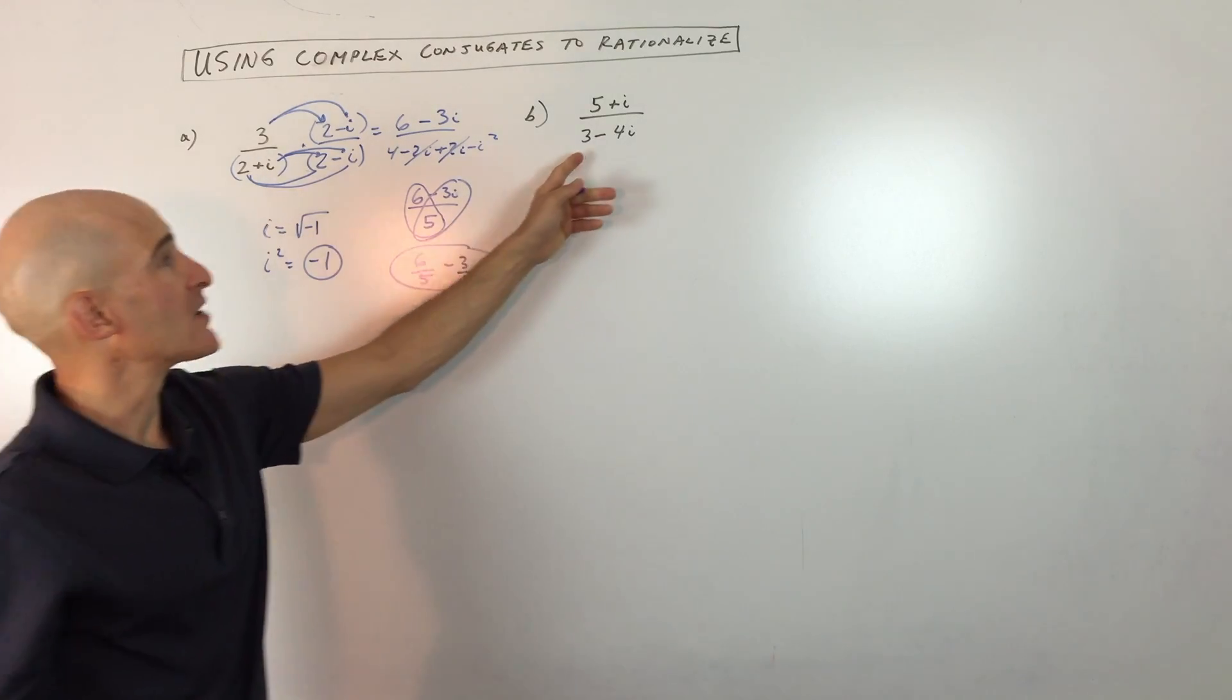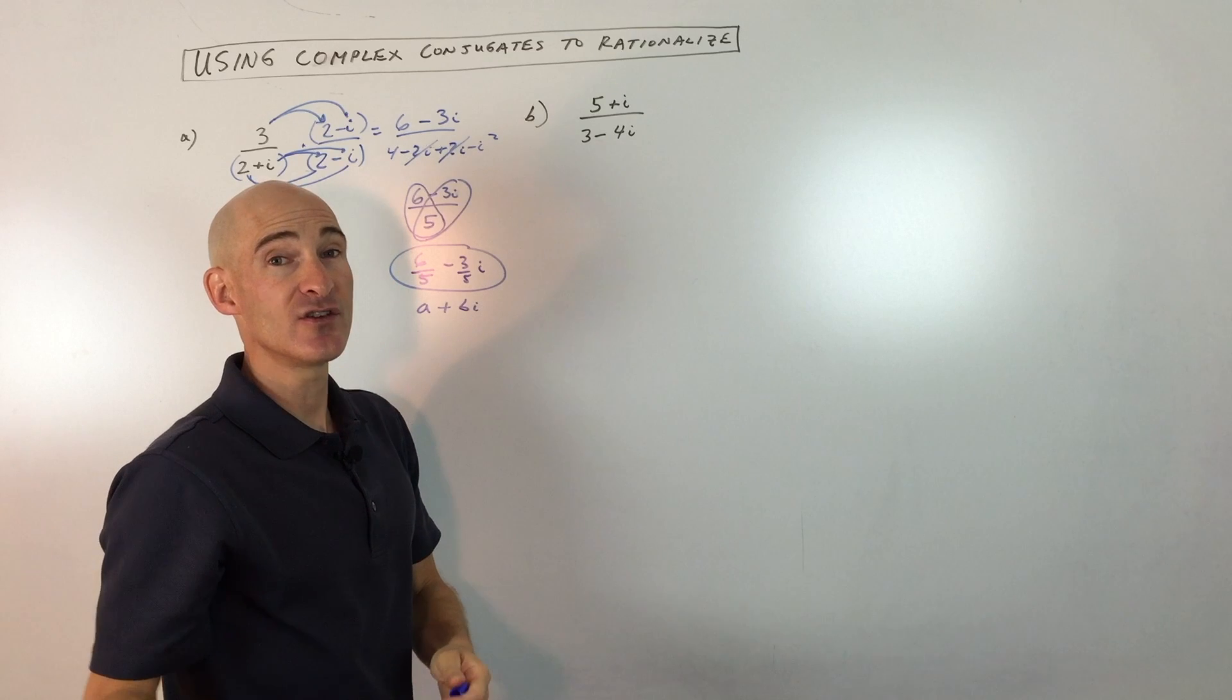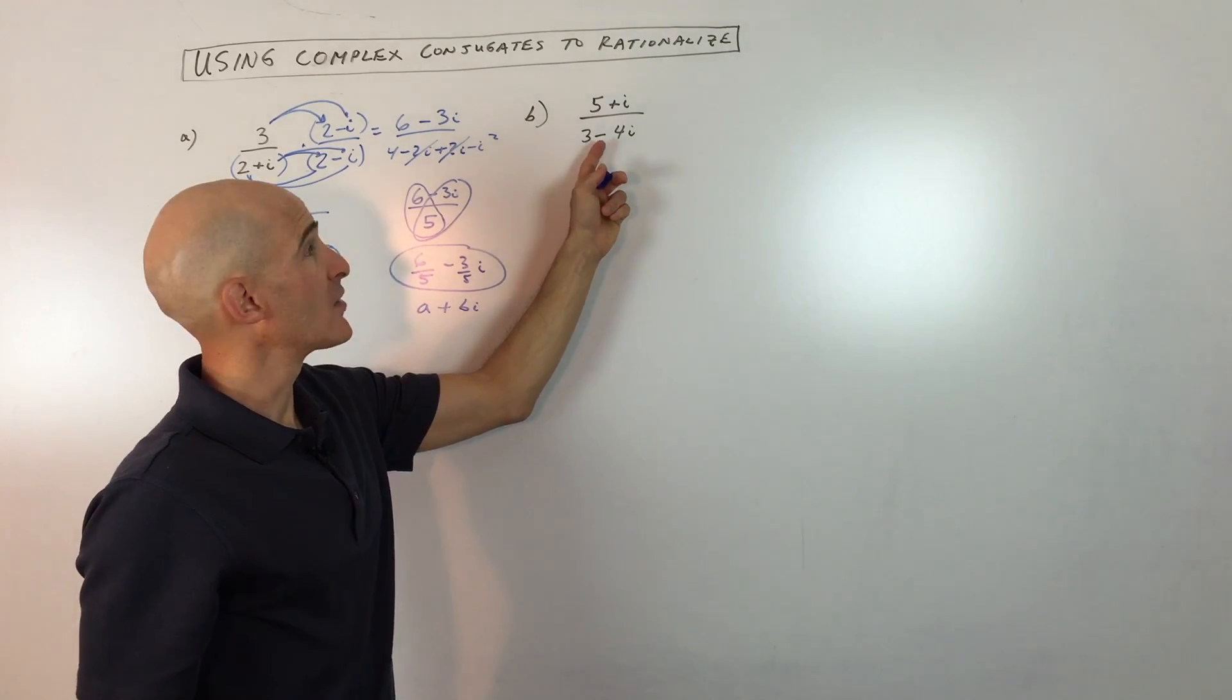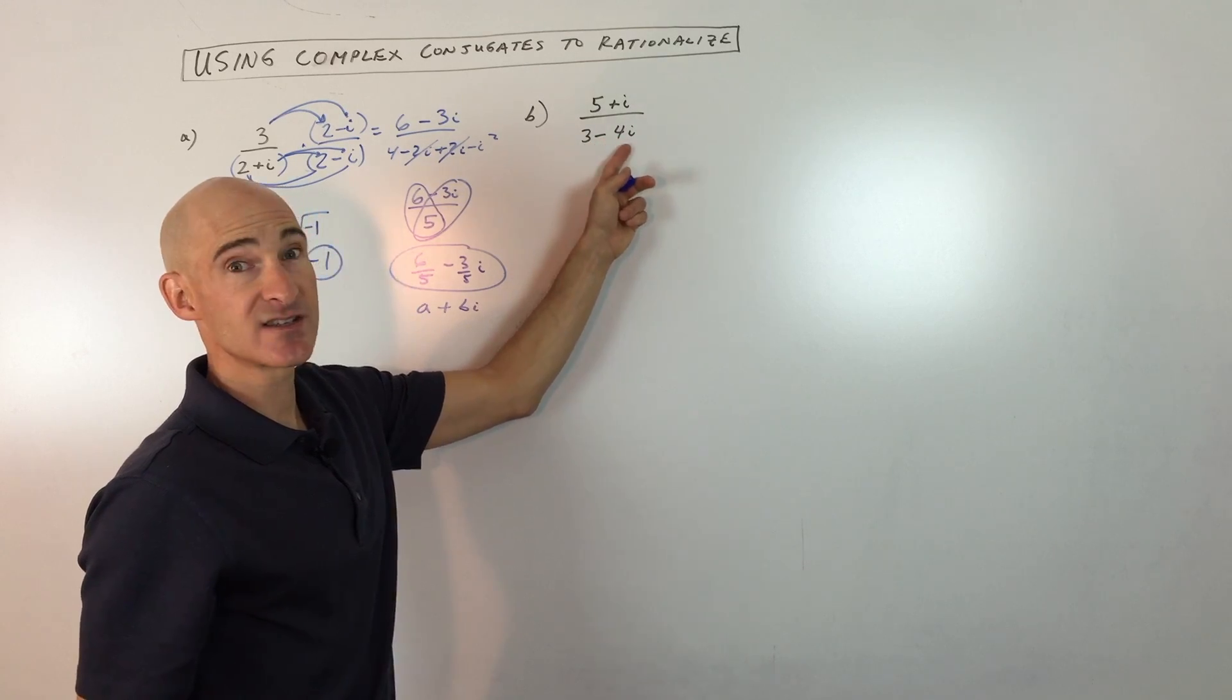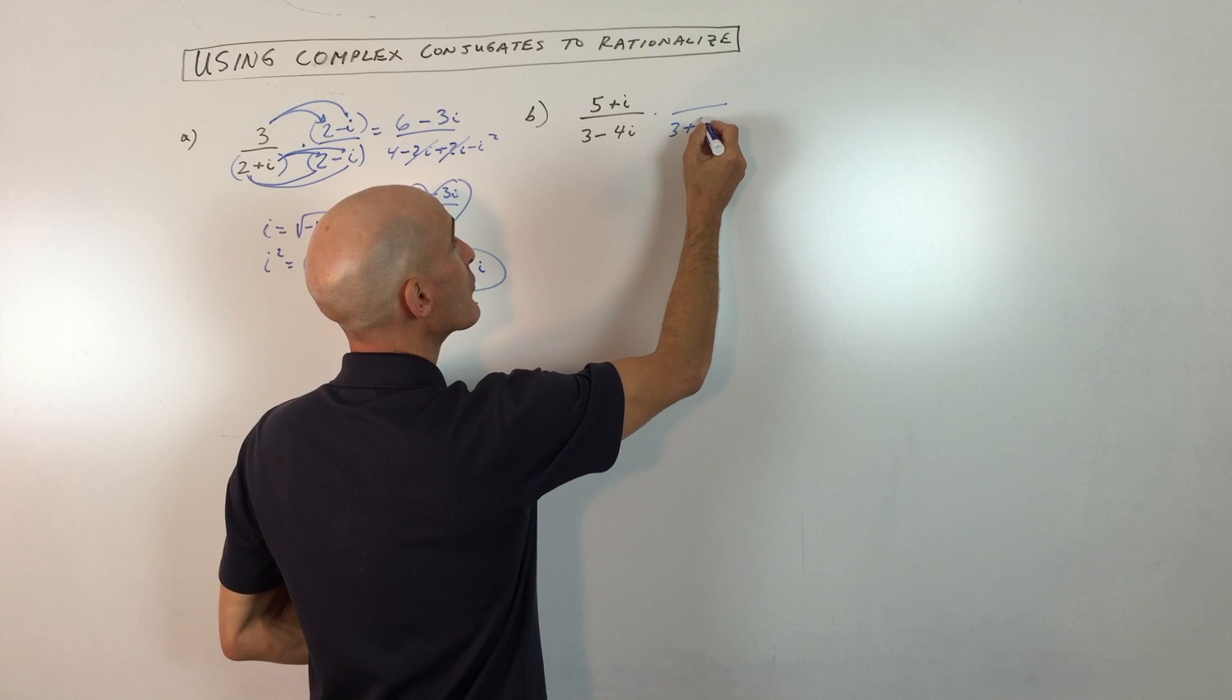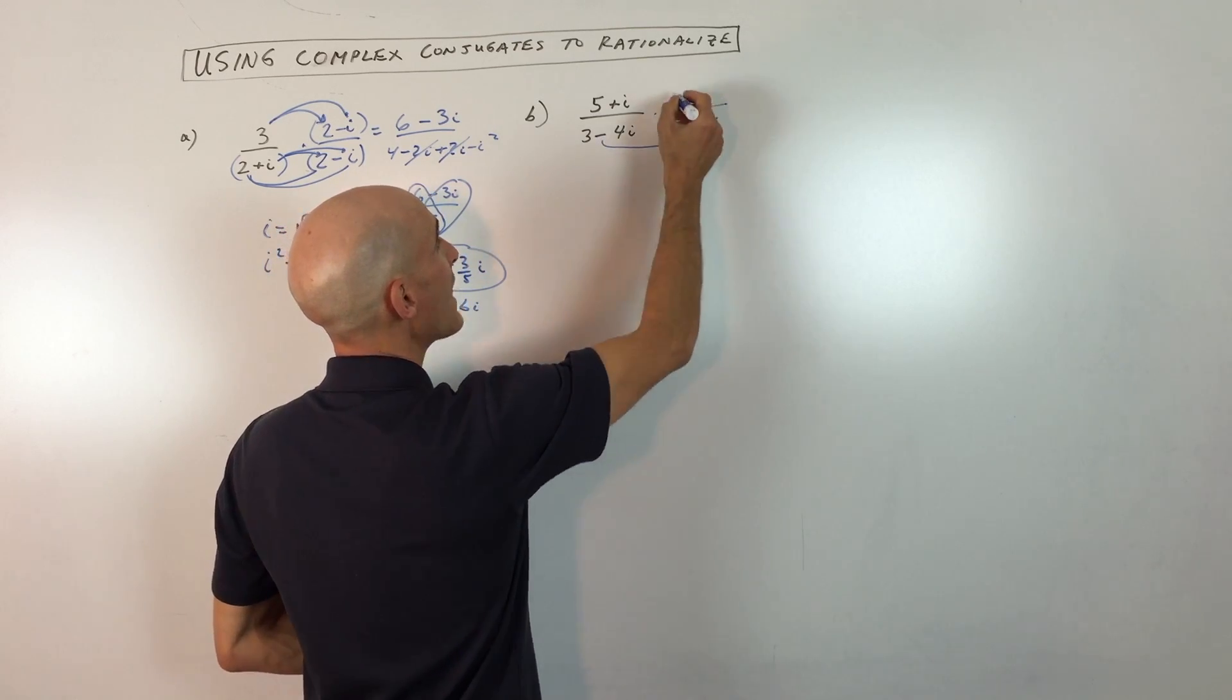Let's look at another example real quick. So this one here, same idea. We've got that i in the denominator. It's considered not proper. So what we're going to do is we're going to multiply by the conjugate. And they call this a complex conjugate because this is a complex number. But all you do is you just multiply by three plus four i. You're just changing that sign in between to the opposite.